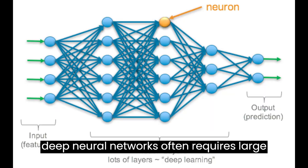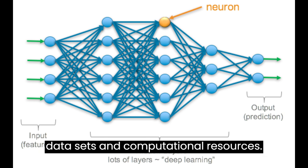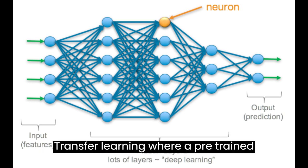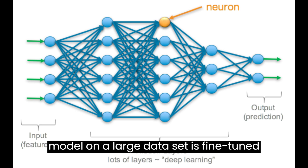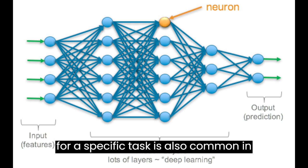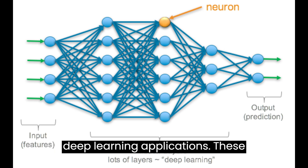Training deep neural networks often requires large datasets and computational resources. Transfer learning, where a pre-trained model on a large dataset is fine-tuned for a specific task, is also common in deep learning applications.